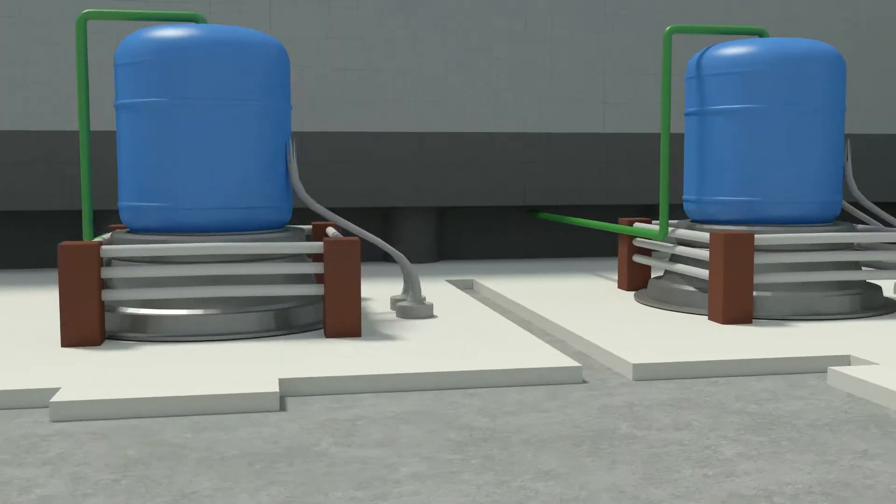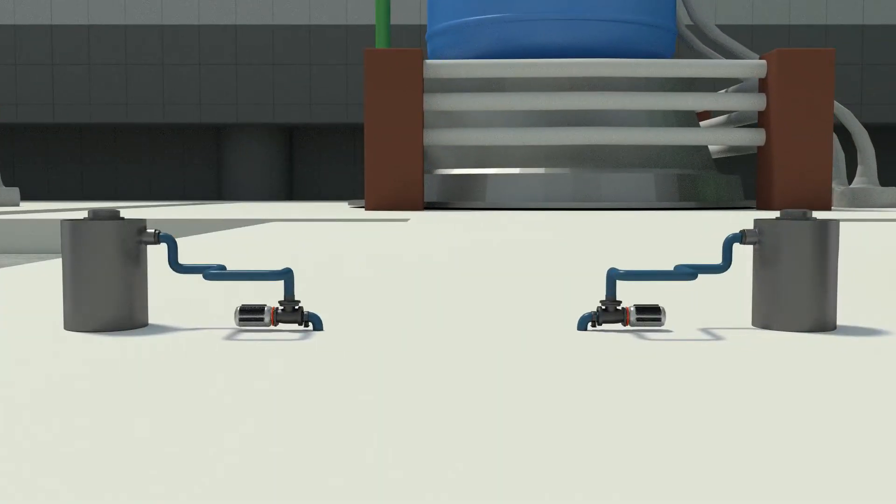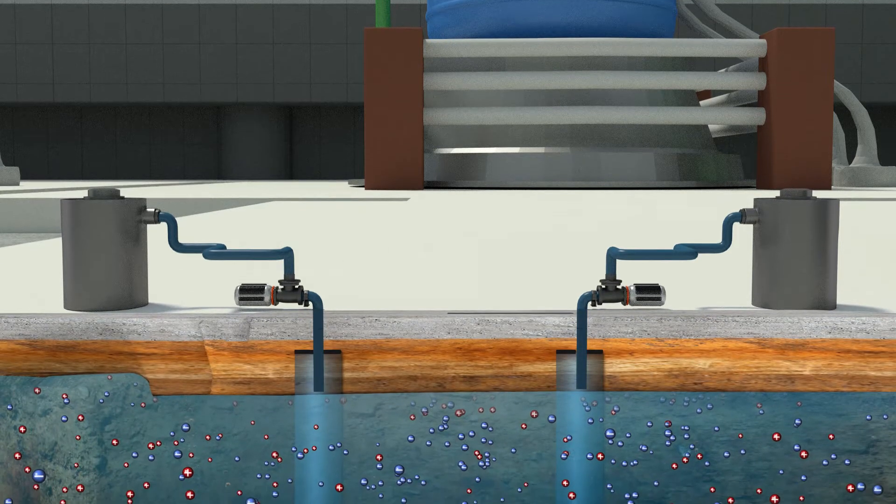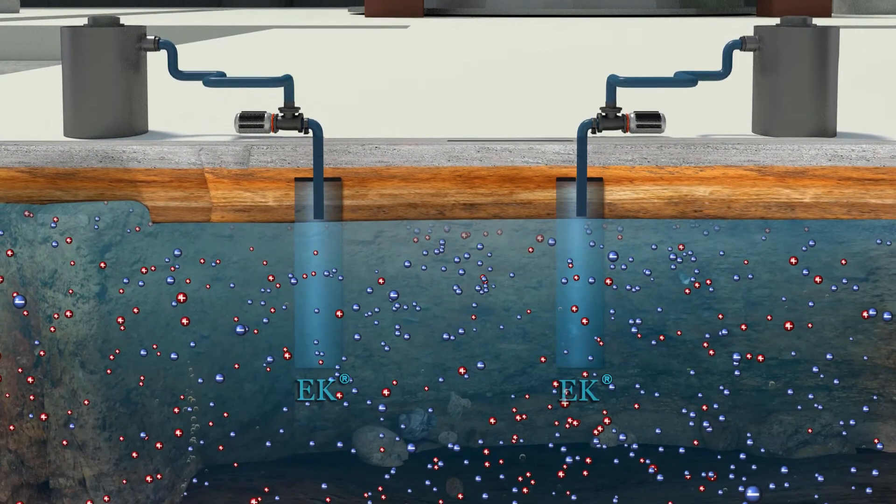Elgarisi Company has developed the Electrokinetic System for Groundwater Remediation, which is based on the electrically-induced transport of contaminants in groundwater.